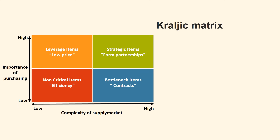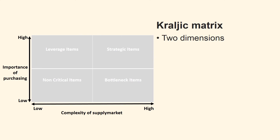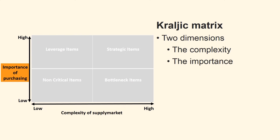The Kralich Matrix is used to analyse the purchasing portfolio of a firm and thereby support corresponding decisions and actions regarding purchasing of commodities and products. The matrix consists of two dimensions: the complexity of the supply market and the strategic importance of purchasing.